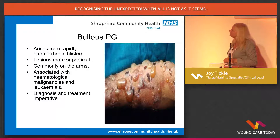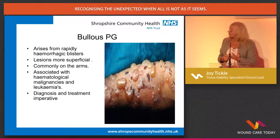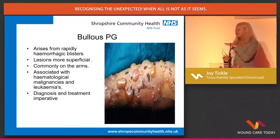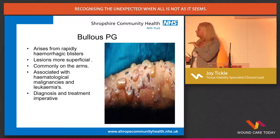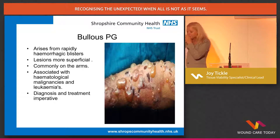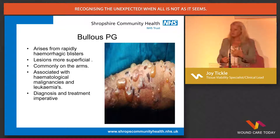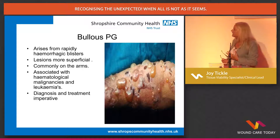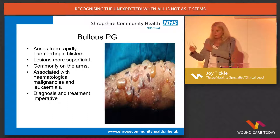Bullous pyoderma — lots of haemorrhagic blistering, can you see how painful that must be for a patient? The ulcers do tend to remain very superficial and are commonly on the arms. If you start to see that with no other rationale, start looking at blood tests for haematological malignancies. Treat the underlying condition and the pyoderma will respond.